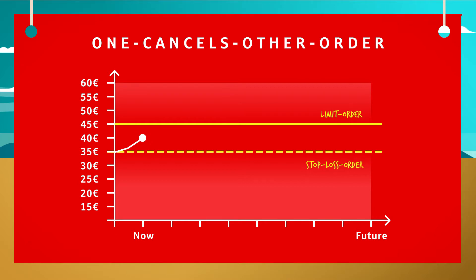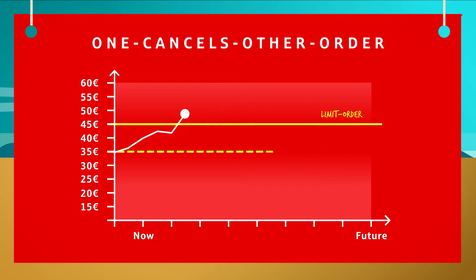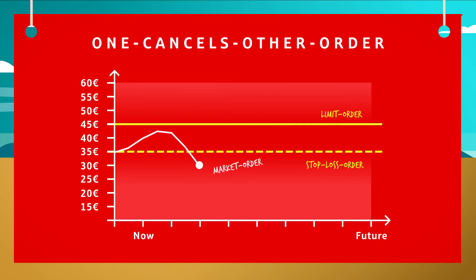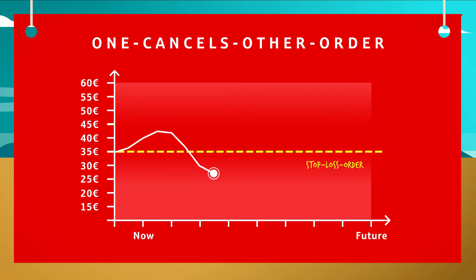This way you have double protection. The one cancels other order has a special feature: it contains two orders, but only one is executed — the one whose execution comes first. If the share rises to 45 euros to your advantage, the limit order will come into effect. You can sell, and the stop loss order will be deleted. If the share price drops under the stop loss mark, the order will be transformed to a market order and optimally accounted at the next market rate. The limit order will be deleted at the same time.